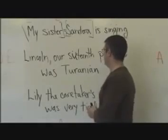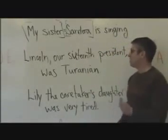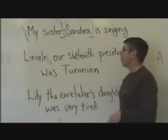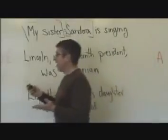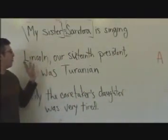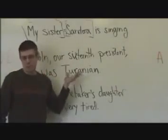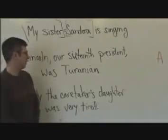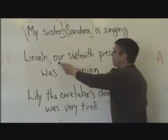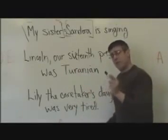Let's take a look at a few more examples. 'Lincoln, our 16th president, was a Turanian.' Now, 'our 16th president' — I've punctuated it in the proper way, as you would normally punctuate it, with commas. Because what other Lincolns would you be thinking about?